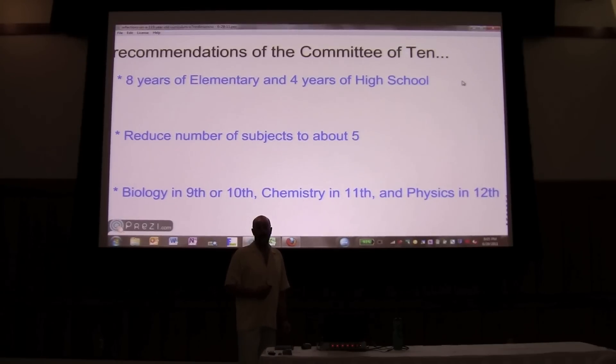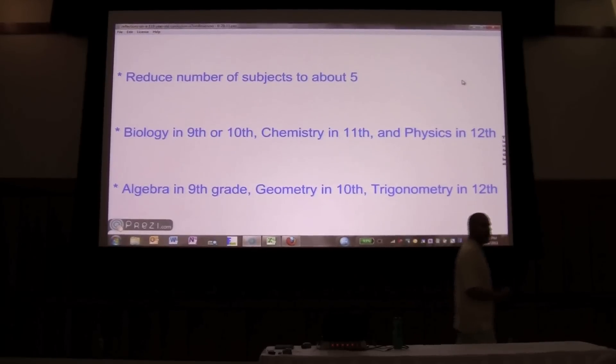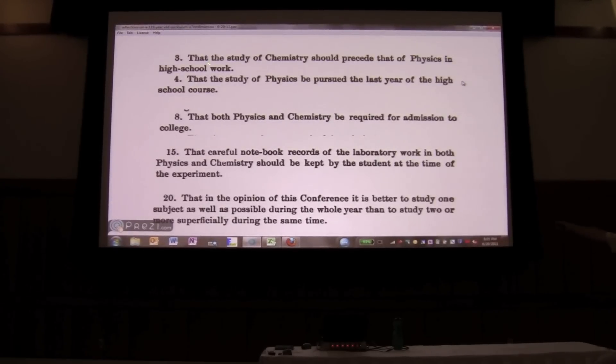They said biology in the 9th grade, chemistry in the 11th grade, and physics in the 12th grade. That's what they said. And here are some screenshots from the original documents. That the study of chemistry should proceed out of physics. That the study of physics should be pursued the last year of high school. We have a physics first movement in the United States. It took about 110 years in order to change what the Committee of 10 arbitrarily said at that time. That both physics and chemistry should be required for admission to college.